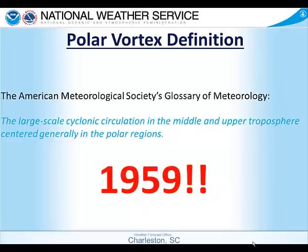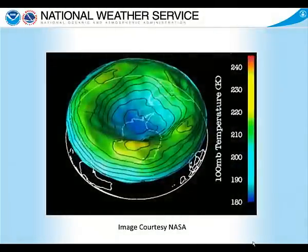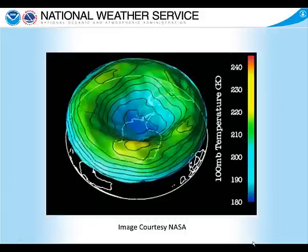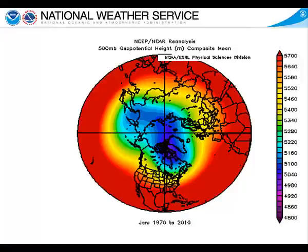Now let's take a look at the polar vortex in three dimensions. In this image provided by NASA, which is over the Southern Pole, you can see the cooler colors representing lower heights in the middle portion of the atmosphere. Those lower heights represent more dense air underneath and hence colder air when we look at the surface. Turning our attention to the North Pole, here's a map of the average 500 millibar heights during the month of January from the years 1970 to 2010. The polar vortex is represented by the darker blue colors. On average, there is a center in far northern Canada on the north side of Hudson's Bay, stretching across the North Pole, and another extended center down towards the Aleutian Islands headed towards Siberia.